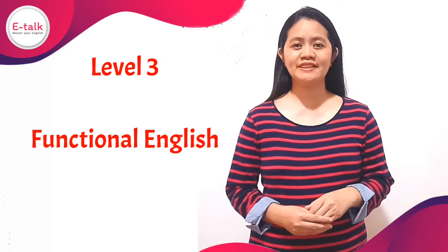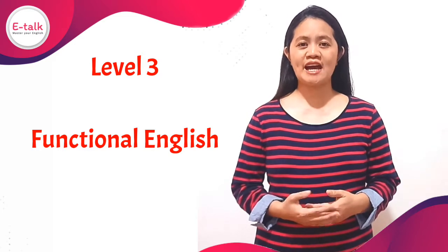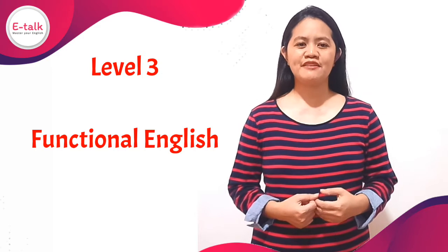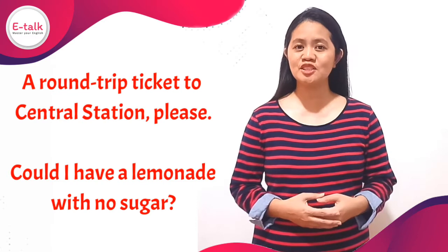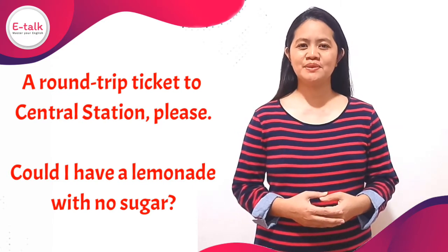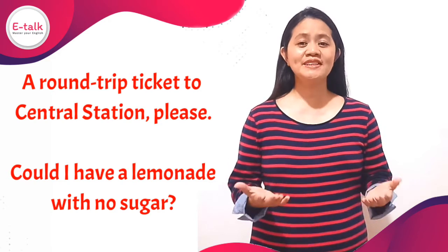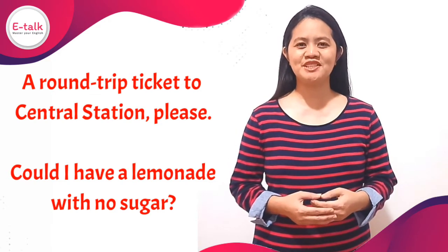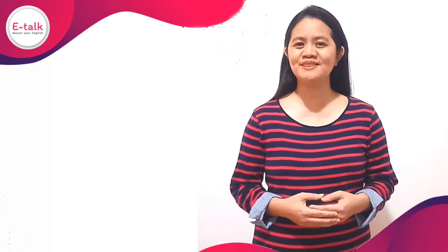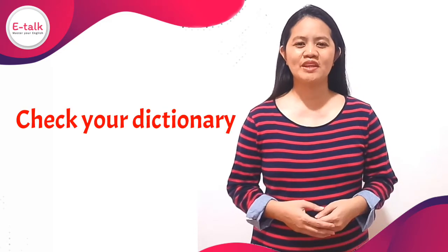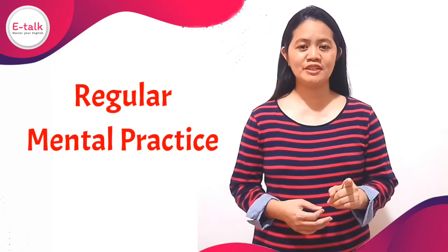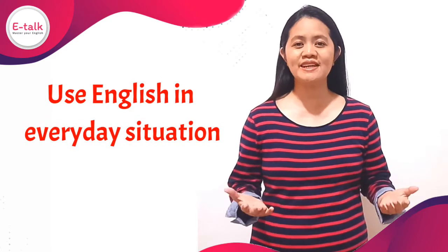Level 3: Functional English. On this level, you imagine having to use English for everything that you need to do. After every time you speak in your native language, think of how you would say that in English. For example, how would you buy a train ticket or order a drink in an English-speaking country? A round-trip ticket to Central Station, please? Could I have a lemonade with no sugar? This helps develop your English for real-life situations, even though you are only thinking and not speaking. If during this exercise you don't know how to say something, check your dictionary later. If you do this mental practice regularly, you will develop the ability to use English in everyday situations.